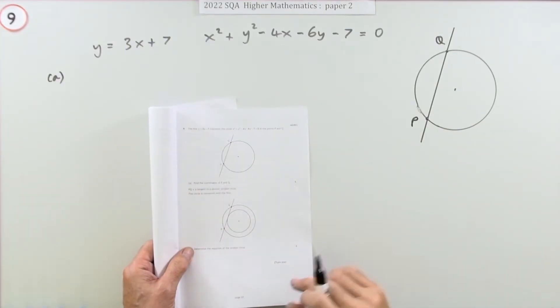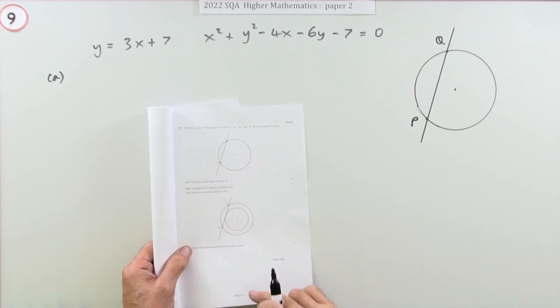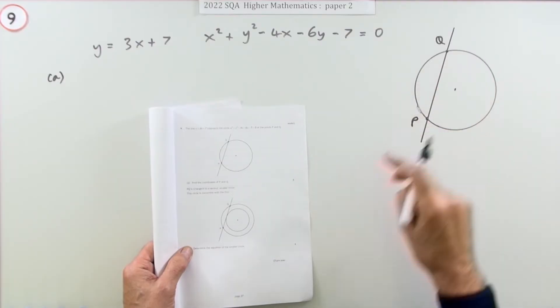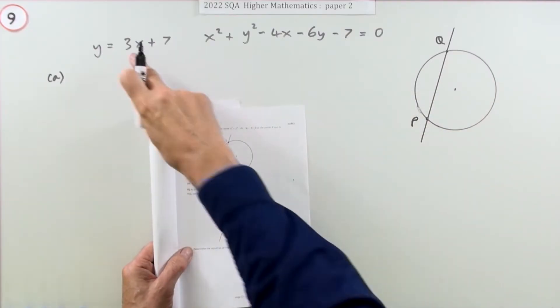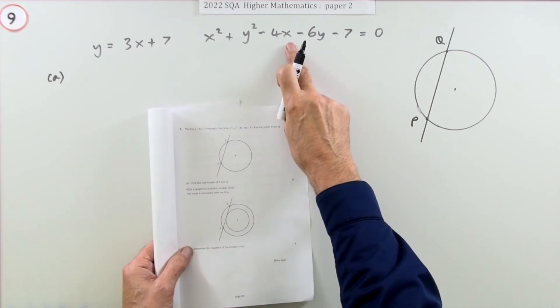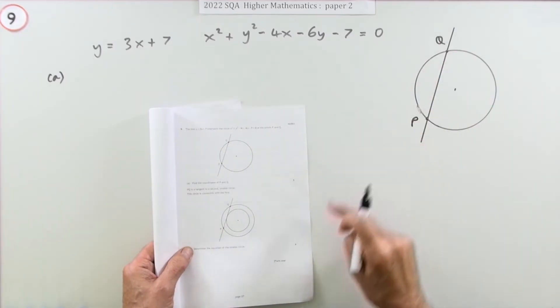Question 9 from the 2022 Higher Maths paper, a 9 mark question, this time on circles. The first one for 5 marks is just find the points of intersection of a circle. This line intersects this circle at the points P and Q. What are the coordinates of P and Q?